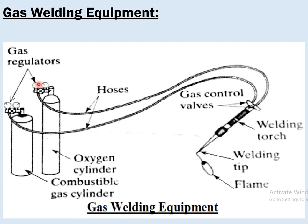These are the pressure devices to know how much gas is inside the cylinder. This is the regulator. These flexible hoses are connected to a mixture unit as well as a welding torch. This is the tip of the welding torch.